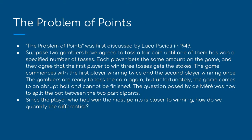The Problem of Points. The Problem of Points was first discussed by Luca Pacioli in 1494. Suppose two gamblers have agreed to toss a fair coin until one of them has won a specified number of tosses. Each player bets the same amount and they agree that the first player to win three tosses gets the stakes. The game commences with the first player winning twice and the second player winning once, but the game comes to an abrupt halt and cannot be finished. The question posed was how to split the pot between the two participants.